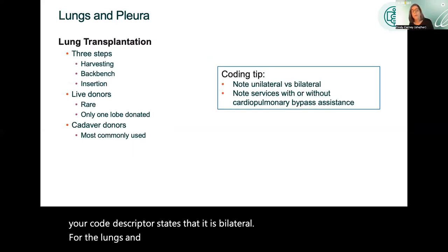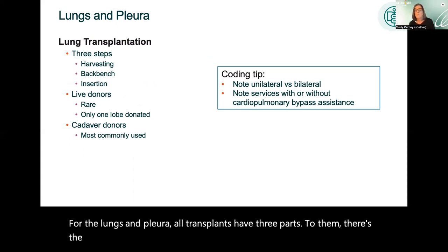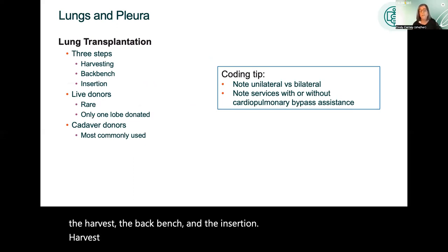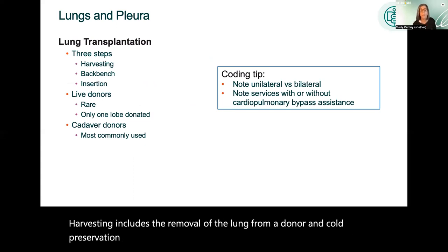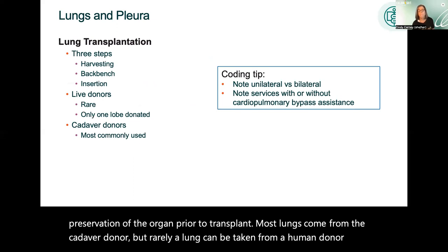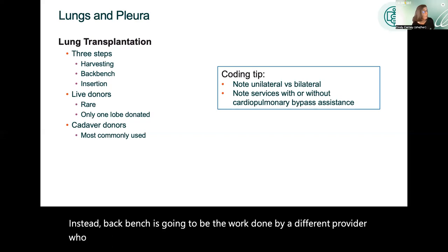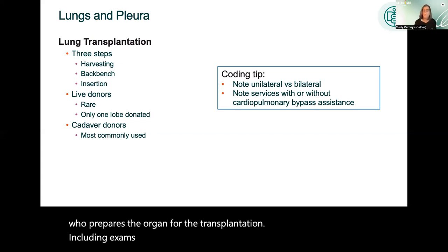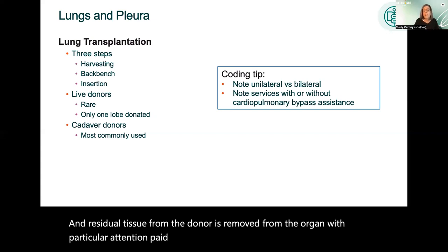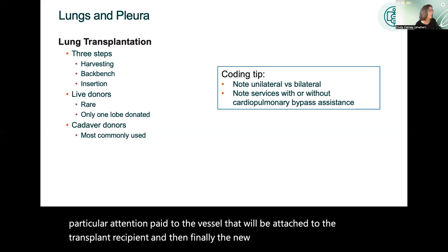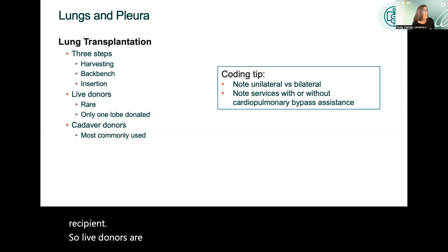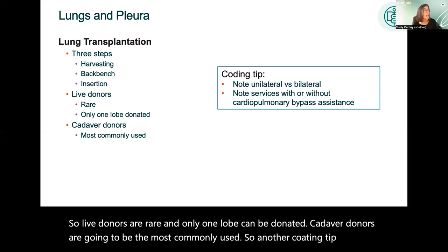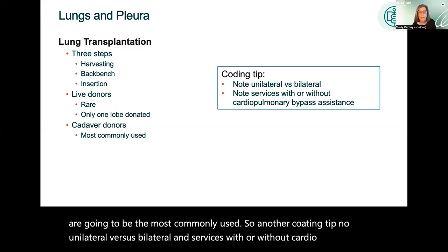For the lungs, all transplants have three parts: the harvest, the backbench, and the insertion. Harvesting includes removal of the lung from a donor and cold preservation of the organ prior to transplant. Most lungs come from cadaver donors, but rarely a lung can be taken from a living donor. Backbench is the work done by a different provider who prepares the organ for transplantation, including examining it for abnormalities or injuries. Finally, the new organ is placed in the recipient. Live donors are rare, and only one lobe can be donated.